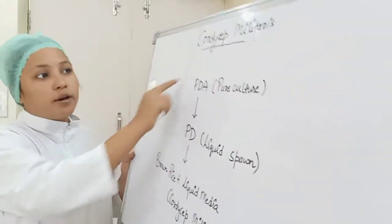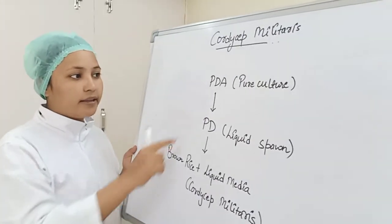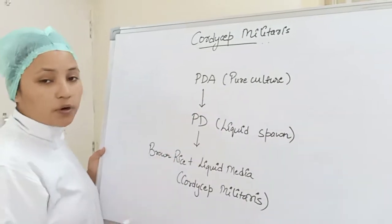Theory part first we'll do. Cordyceps militaris whole cycle is divided in three parts. First is PDA, it means Potato Dextrose Agar, which will be pure culture.